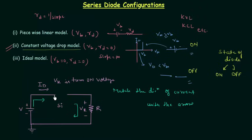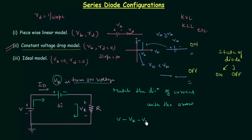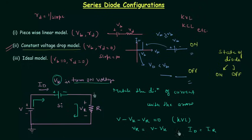Since the diode is on, I will replace it with its equivalent circuit, which contains a voltage source equal to Vk, the turn-on voltage or barrier potential. Now we can calculate Id and Vr. Applying Kirchhoff's voltage law: V − Vk − Vr = 0, which gives Vr = V − Vk. Id equals Ir, which is Vr divided by R. In this way you can easily solve numerical problems.